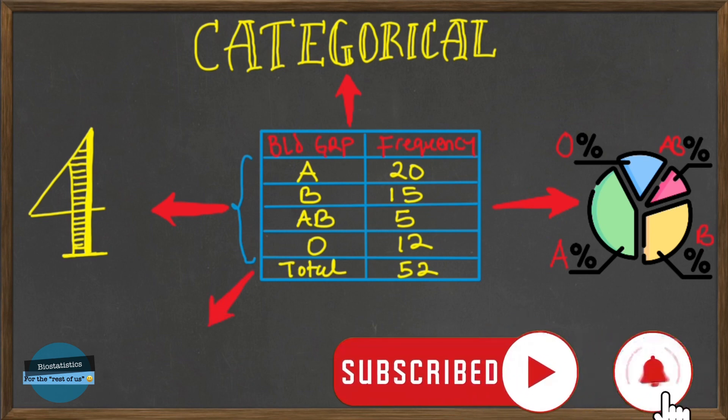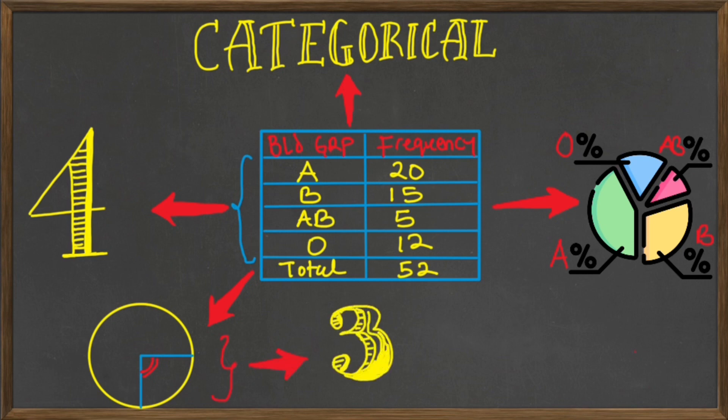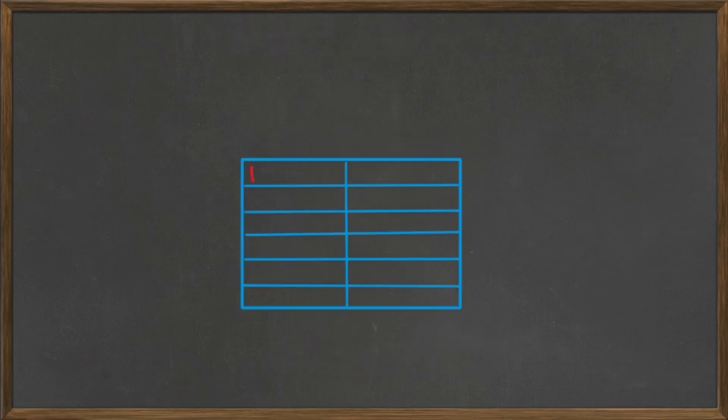Since each sector is defined by the central angle and we know that a circle has 360 degrees for the central angle, for blood group A, we had 20 individuals out of a total of 52 people.